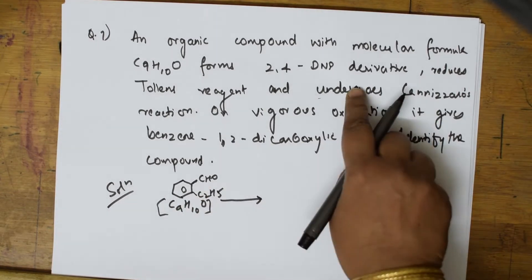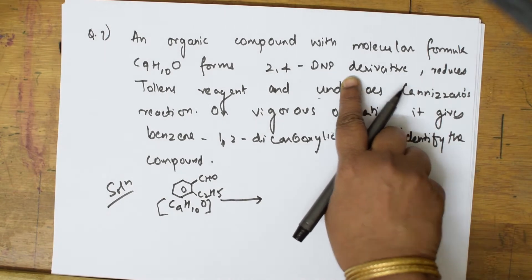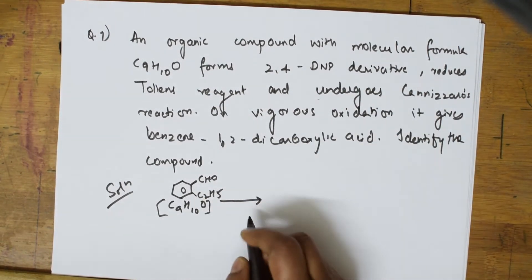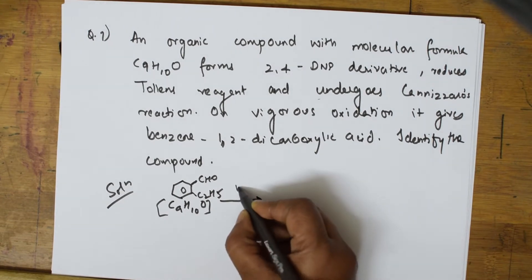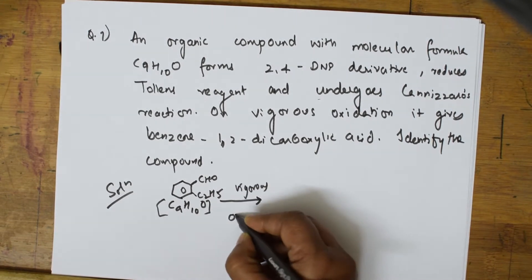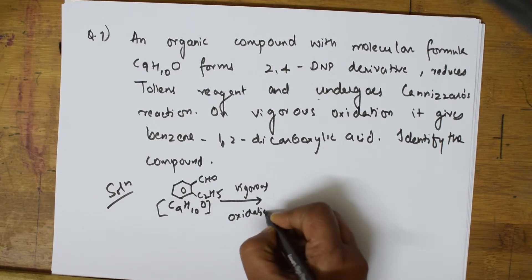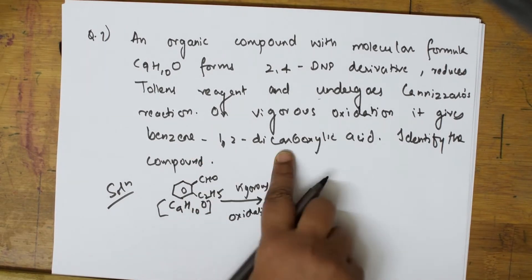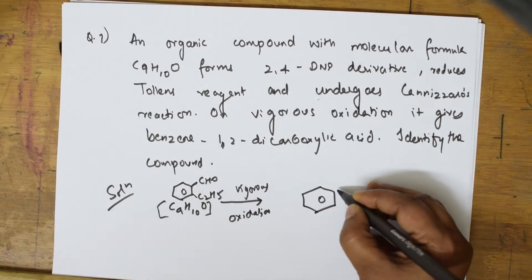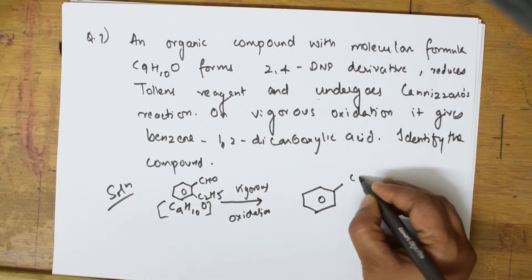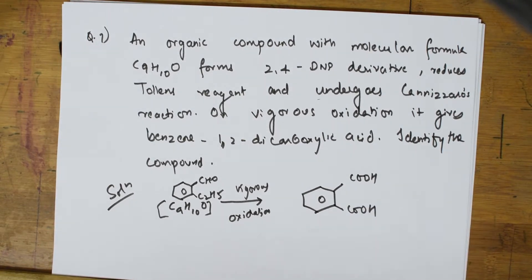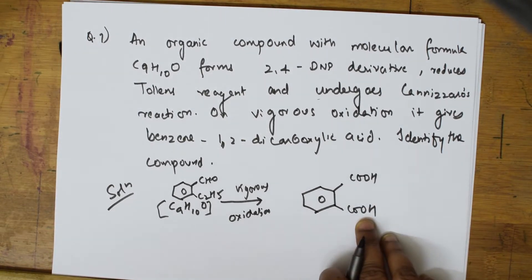This compound has an aldehyde which forms a 2,4-DNP derivative, reduces Tollens reagent, and undergoes Cannizzaro's reaction. On vigorous oxidation it forms benzene 1,2-dicarboxylic acid. The compound is now identified.